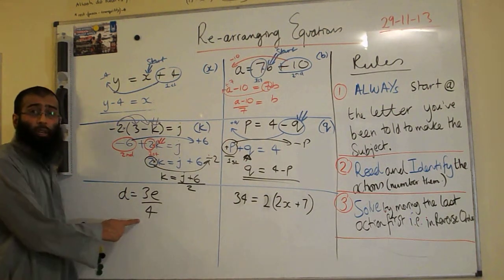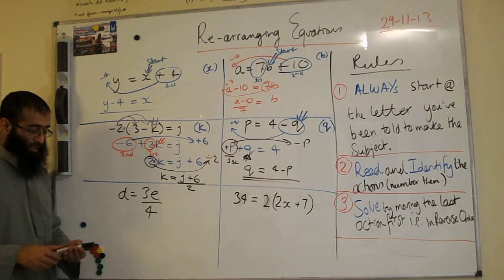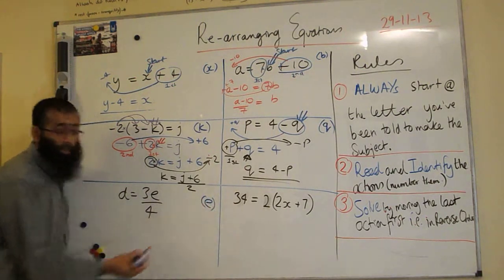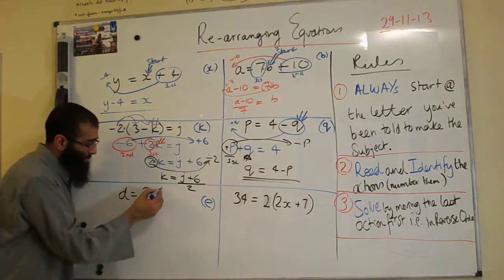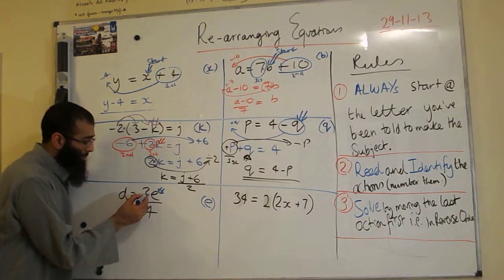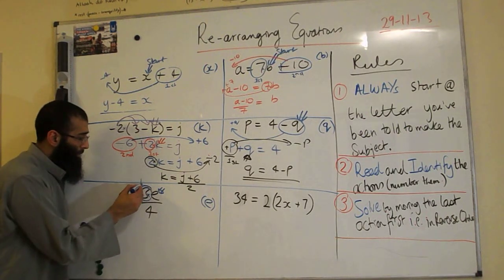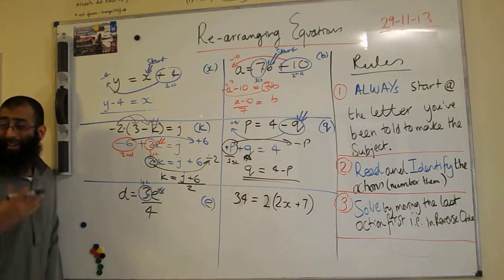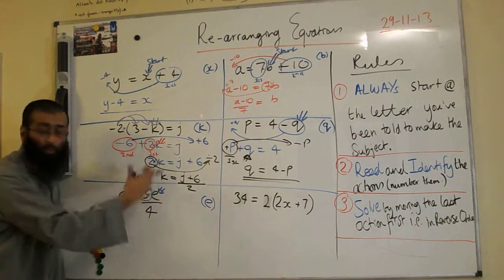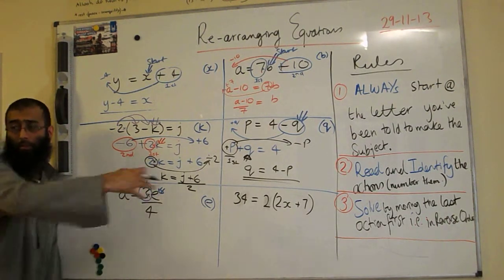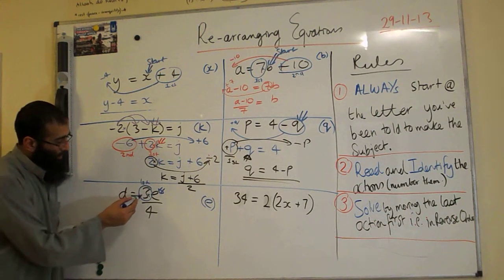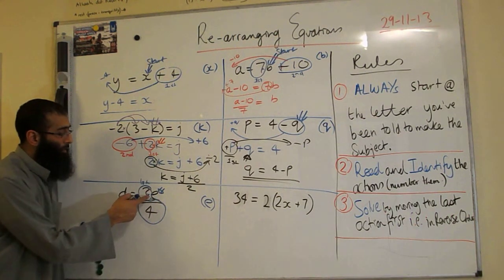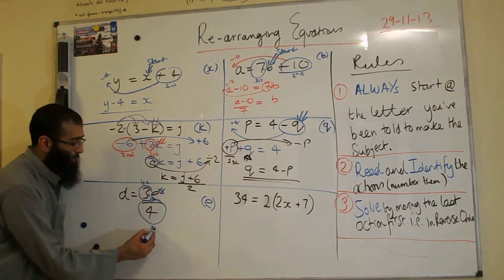Let's have a look at our next question over here. In this question, D is equal to 3E divided by 4. We have to make E the subject. So the rule says always start that letter. So we start at the E. E is being timed by 3. That is called our first action. So that's our first action and the second action is the 4, the divide by 4. So E has been timed by 3 and divided by 4. So divide by 4 is my second action.